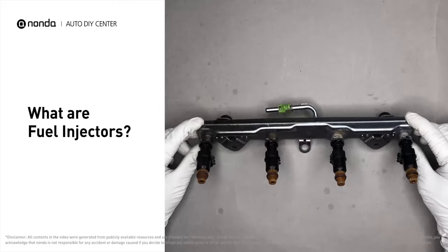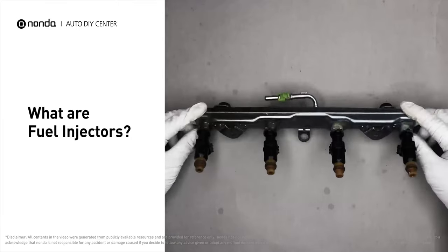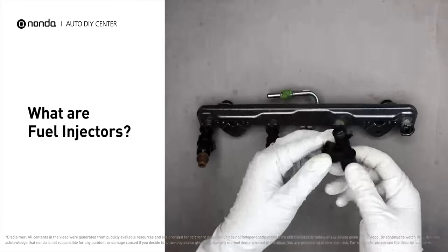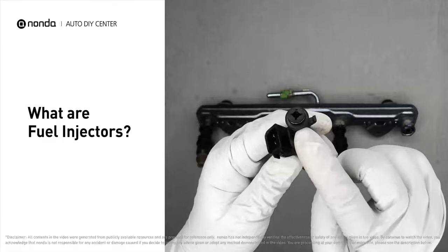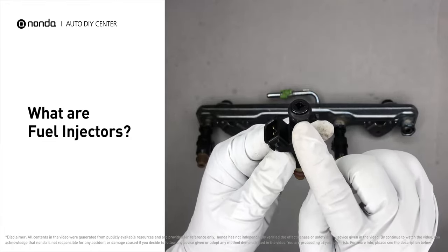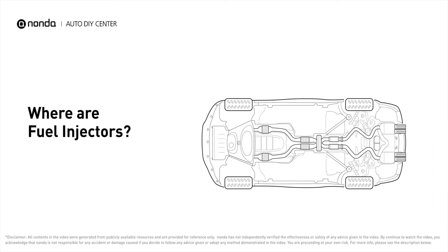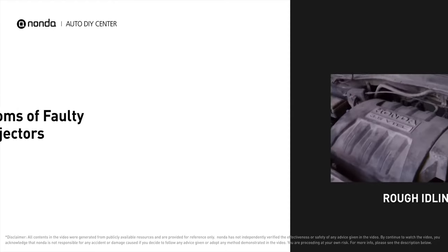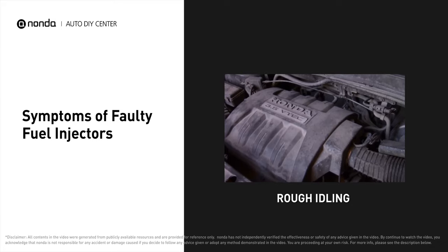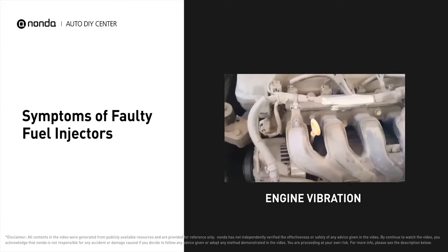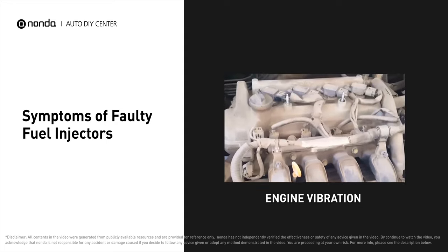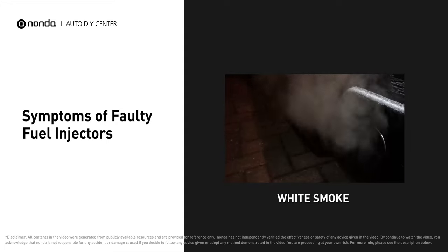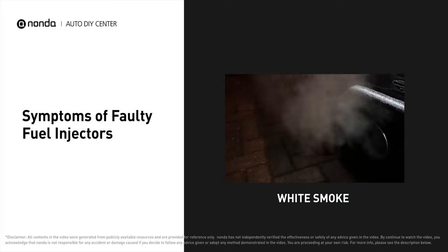Fuel injectors are part of the engine's fuel delivery system that delivers precise gasoline or diesel amounts to each cylinder exactly when needed. They have an atomizing nozzle that distributes fuel evenly for optimum combustion and efficiency. Most fuel injectors are at the head of the engine, mounted in the intake manifold to spray fuel directly at the intake valves. A faulty fuel injector can cause a short or uneven fuel supply, rough or violent idle, engine vibration, white smoke from the tailpipe, and poor gas mileage.